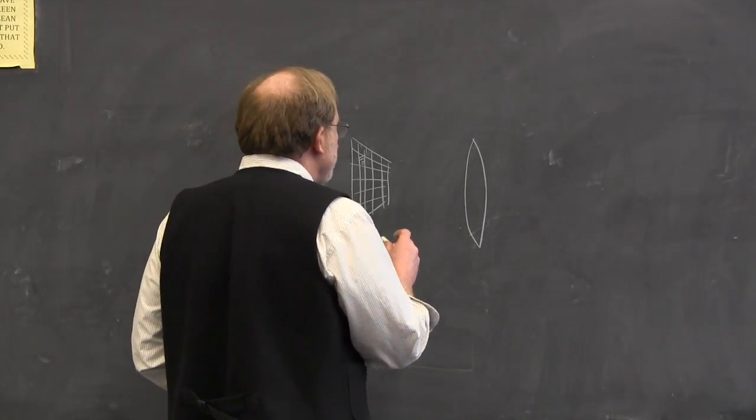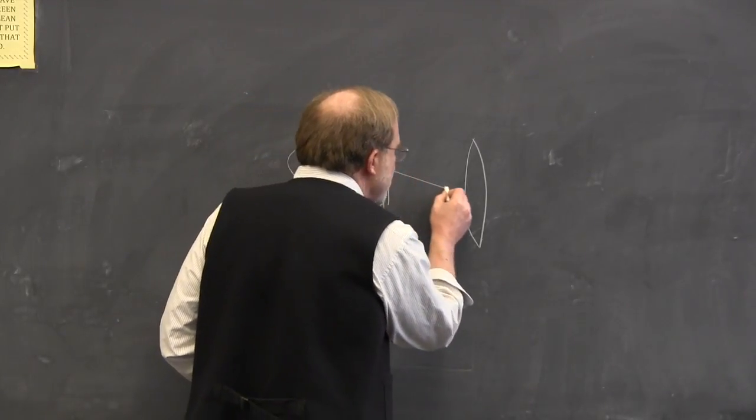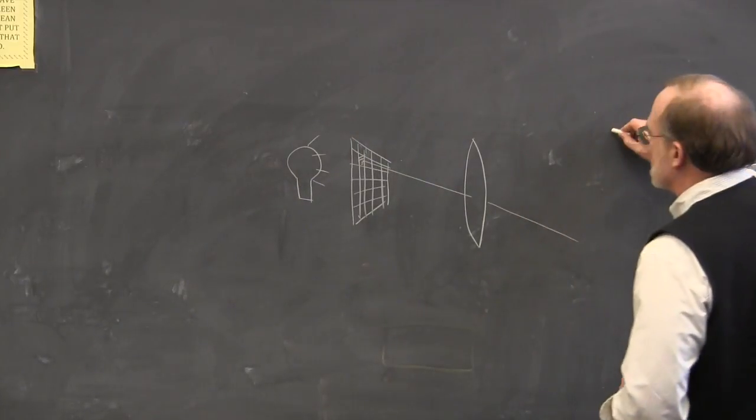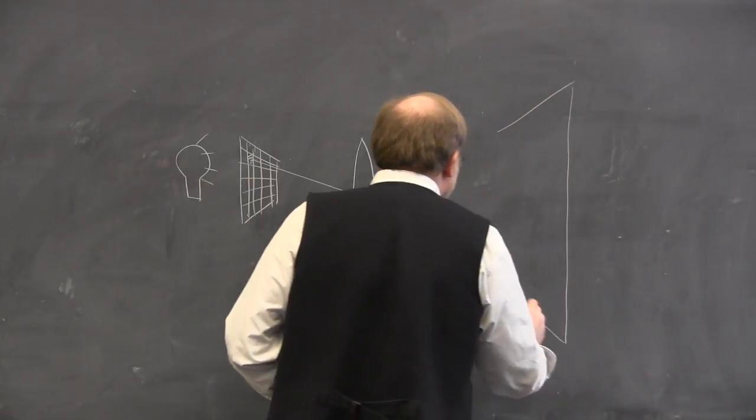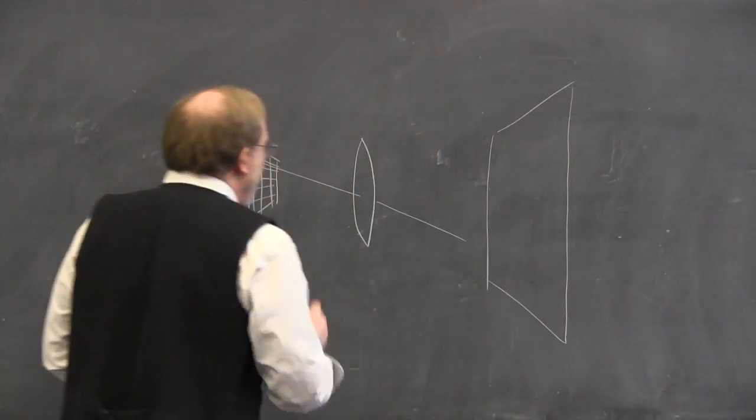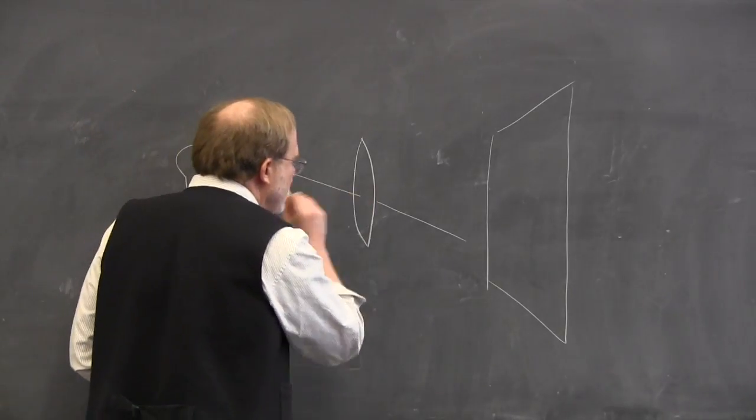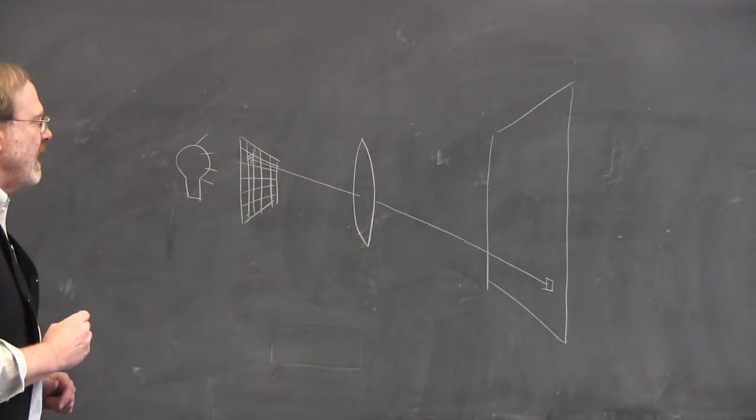This converging lens has a nice property: if you send light from this pixel right through the center of the lens, it goes right through, just like that. So out here you've got a screen, and this light ray from that one lit up pixel goes right through the center of the lens, lands on the screen right there, and paints a little picture of the pixel.